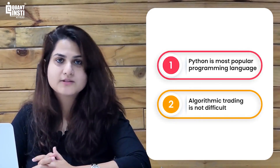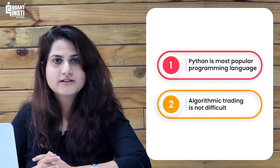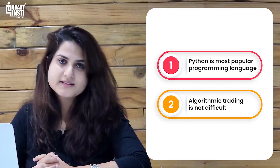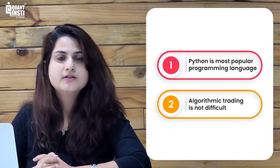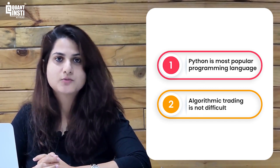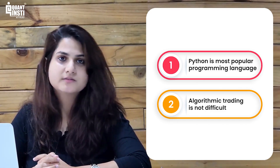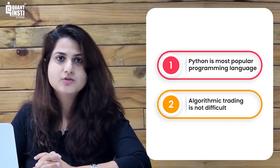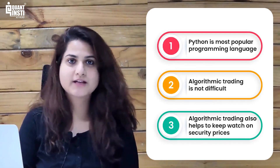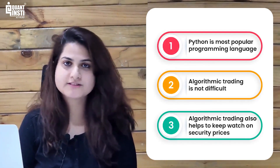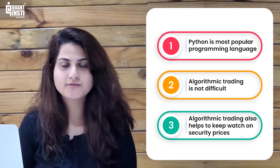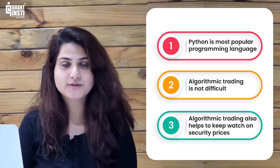Fact number two: algorithmic trading is not difficult. On the contrary, it makes things easier for the trader. For instance, if you bought stocks in 2009 and want to calculate the returns in 2020, instead of manually putting down the returns in Excel, you can calculate the same using Python. Fact number three: algorithmic trading also helps keep a watch on security prices so that orders are executed on your behalf and the quantity of trades is determined accurately.